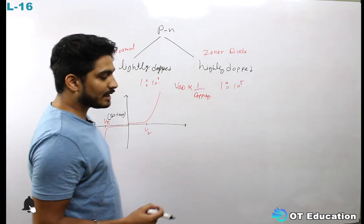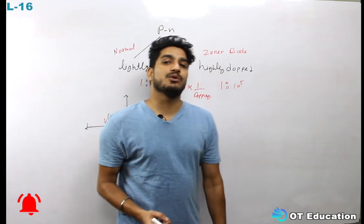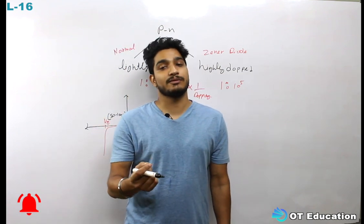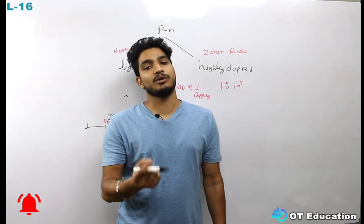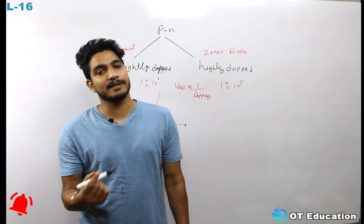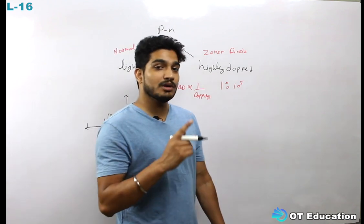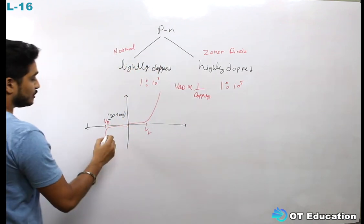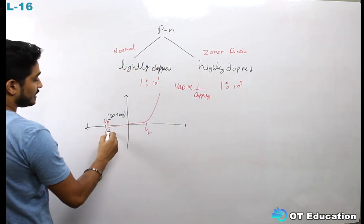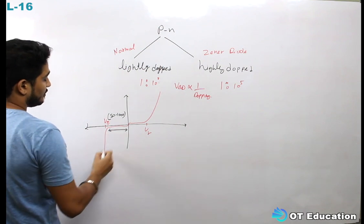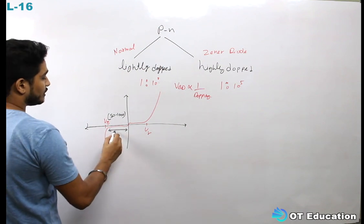If we give a reverse bias to the normal diode, it will not conduct in reverse bias — it will be in without-breakdown mode. This is the reverse bias mode, but without breakdown.